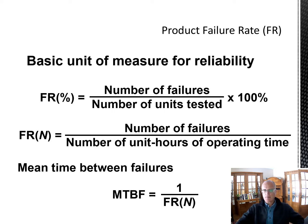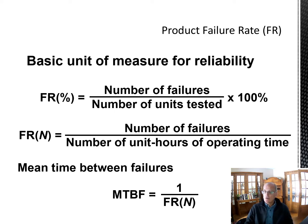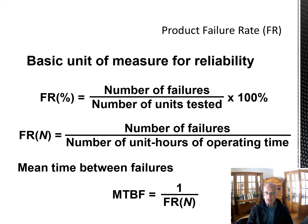The failure rate FRN — which is good to know for multiple choice questions — is the number of failures divided by the number of unit-hours of operating time. This gives a rate in time units, whereas the percentage failure rate is not in time units. The mean time between failures (MTBF) is the expected time the system will run without a breakdown, and equals one over FRN.